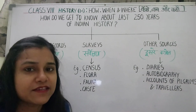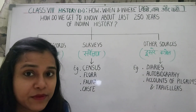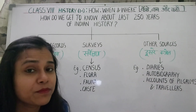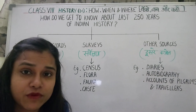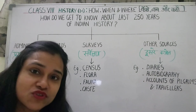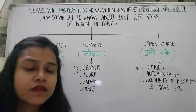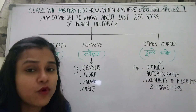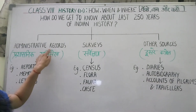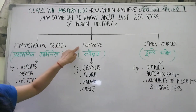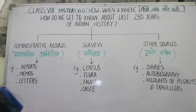We get to know about things from the past 200 years when the British came to India — we get to know about other sources: administrative records, surveys, and other sources.